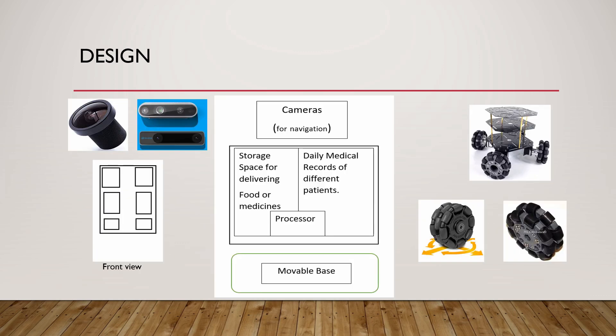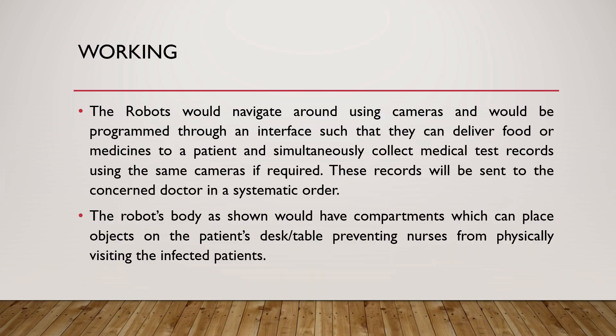As seen, the design will include depth cameras to navigate the robot. Different actuators, sensors, and memory elements will be controlled through a processor. The body of the robot will be divided into different compartments which can store medicinal pills or food items that can be delivered to the patient's room. The wheels shown are Omni wheels, which improve the movement capability of the robot, and the robot can navigate using cameras.